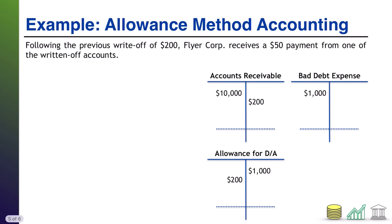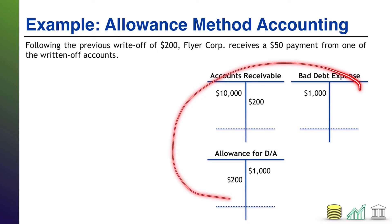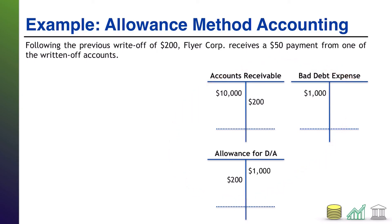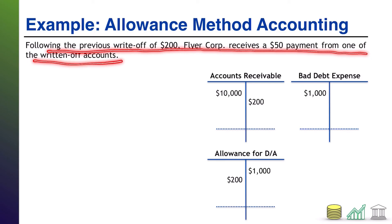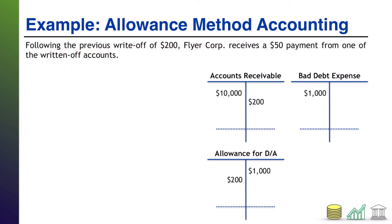Last up — this is still the same problem with all the numbers from the first portion. The only thing happening now is our recovery. Following the previous write-off of $200, FlyerCorp receives a $50 payment from one of the written-off accounts. Normally a payment is just debit cash, credit AR — but in this case, we already wrote that account off, so it doesn't exist anymore.